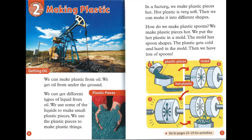In a factory, we make plastic pieces hot. Hot plastic is very soft. Then, we can make it into different shapes. How do we make plastic spoons? We make plastic pieces hot. We put the hot plastic in a mold. The mold has spoon shapes. The plastic gets cold and hard in the mold. Then, we have lots of spoons.